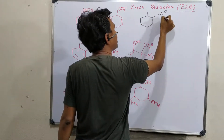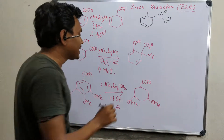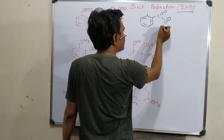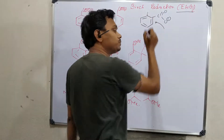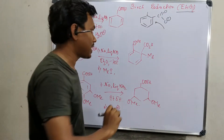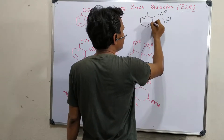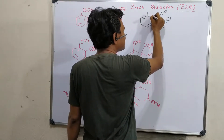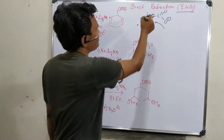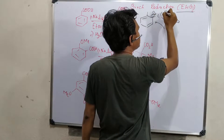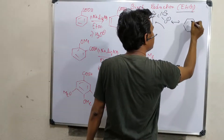Now the question is: where will the electron go? We can see the electron will come here, but the electron will be more stable closer to the electron withdrawing group because it has the capability to stabilize. Consequently, it will produce an anion at that position. This anion is stabilized by resonance with the carboxyl group. You may be a little confused.